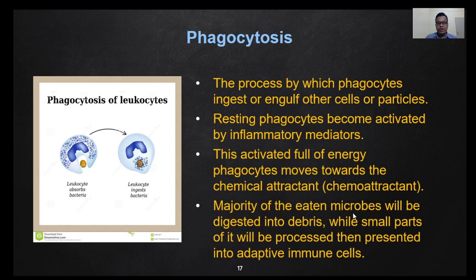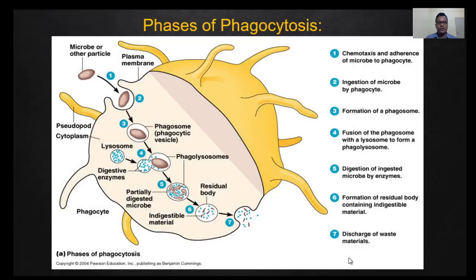The majority of the eaten microbes will be digested into debris, while small parts will be processed and presented to the adaptive immune cells, which are the T cells. The phases of the eating process of phagocytosis are as follows. First, chemotaxis and adherence of the microbe to the phagocyte — chemotaxis means the phagocyte moves towards the microbe or particle in order to ingest it. Second, ingestion of the microbe by the phagocyte — gobbling up the microbe.